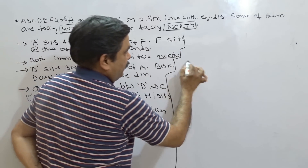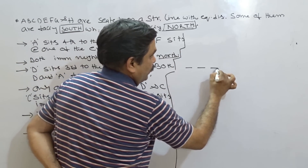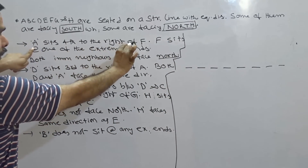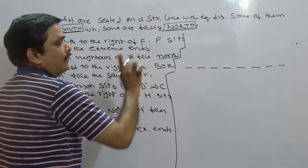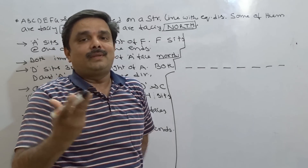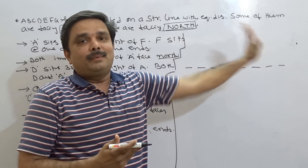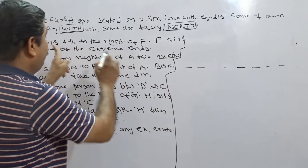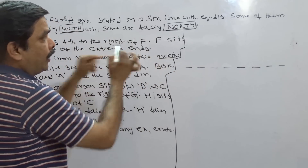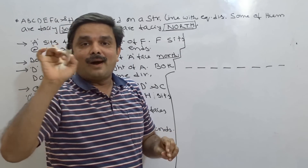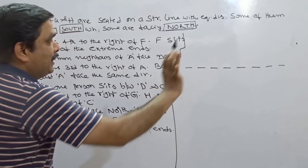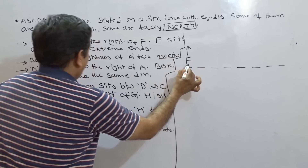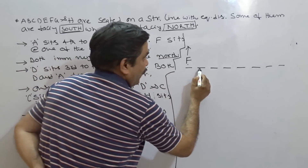Total eight persons are there, so I am taking eight dots: positions 1 through 8. Now the first clue: A sits fourth to the right of F, and F sits at one of the extreme ends. They have not specified whether F is on the left end or right end. In the first possibility, I am taking F facing north at the left end. When F is facing north, A sits fourth to the right of F - counting 1, 2, 3, 4 - it should be A.